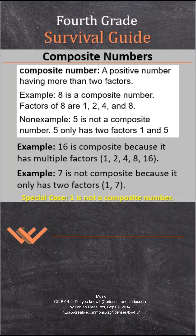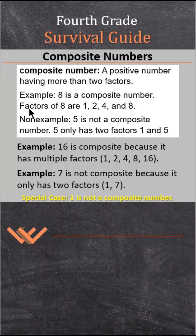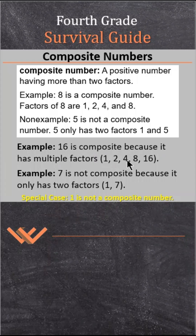Hi fellow mathematicians, this is Mr. Woods. Today I'm talking about composite numbers. A composite number is a positive number having more than two factors. For example, 8 is a composite number — its factors are 1, 2, 4, and 8. A non-example: 5 is not composite; it only has two factors, 1 and 5. 16 is composite because it has multiple factors: 1, 2, 4, 8, and 16. 7 is not composite because it only has two factors, 1 and 7. Special case: 1 is not a composite number either because it's only itself.